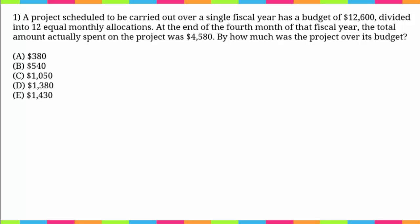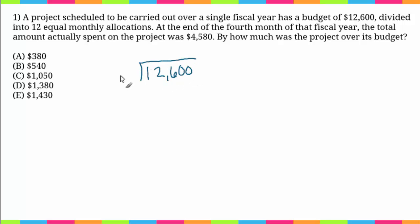Let's start by taking a look at our budget over four months. It says you have a budget of twelve thousand six hundred divided into twelve equal monthly allocations. So to figure out how much per month, we divide by twelve: twelve thousand six hundred divided by twelve gives us a monthly budget of one thousand and fifty dollars.